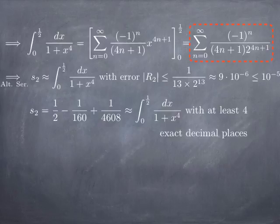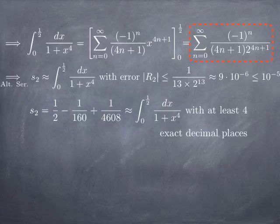So practically speaking, this is very convenient: even if we don't know how to find an antiderivative as a closed-form function, we can find it as the sum of a power series. For any practical purpose, this gives something that is essentially as good as an exact value.